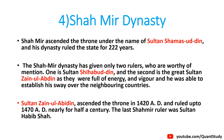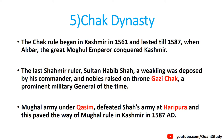Next is the Chak dynasty. When the Shahamir dynasty became weak, an army commander named Gazi Chak took over. The Chak dynasty was founded by Gazi Chak. This rule started in 1561 and ended in 1587, because in 1587, the Mughals defeated Gazi Chak and took control of Kashmir.